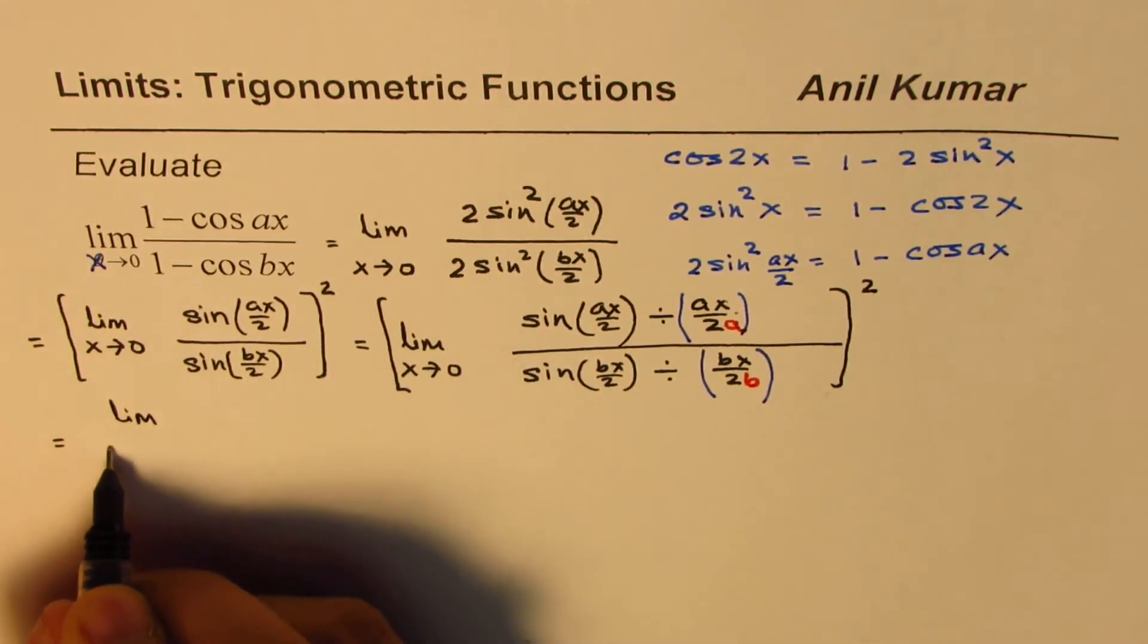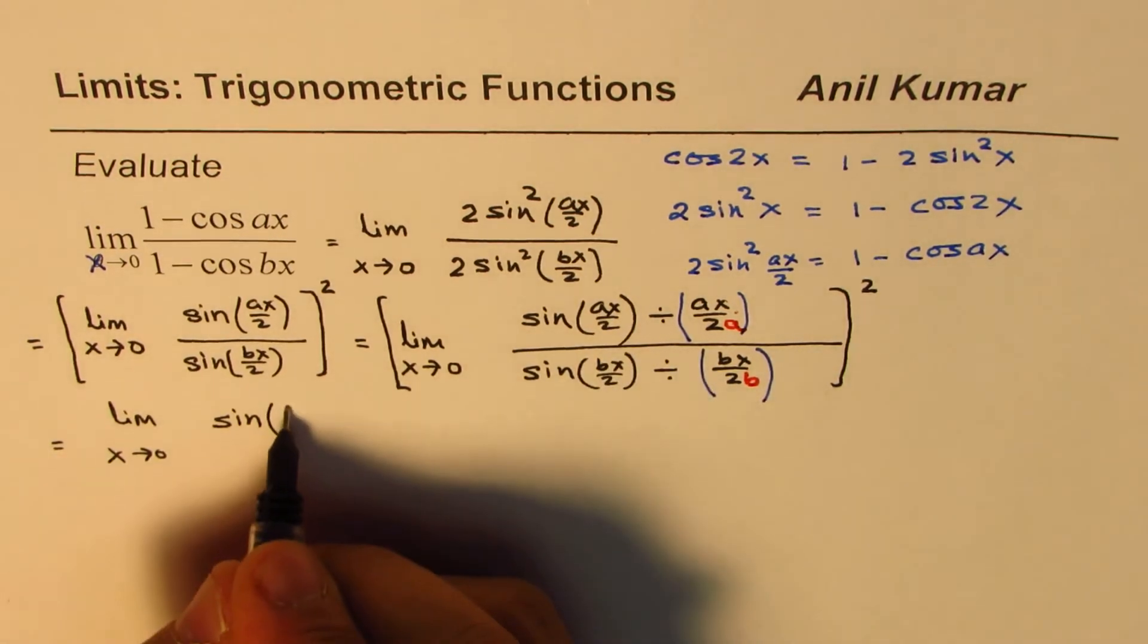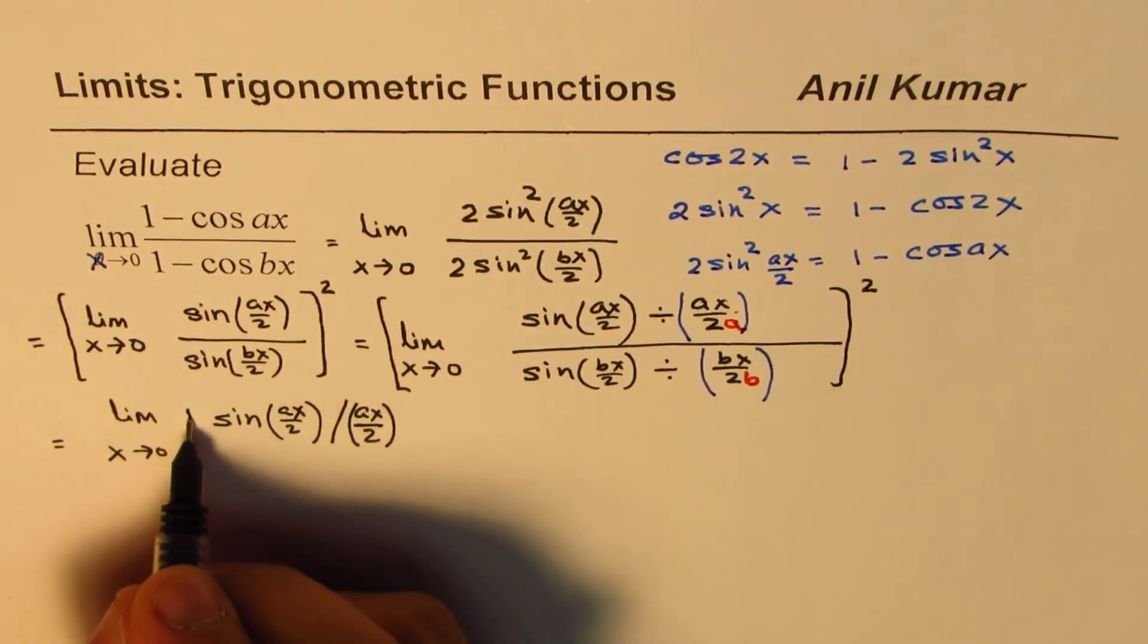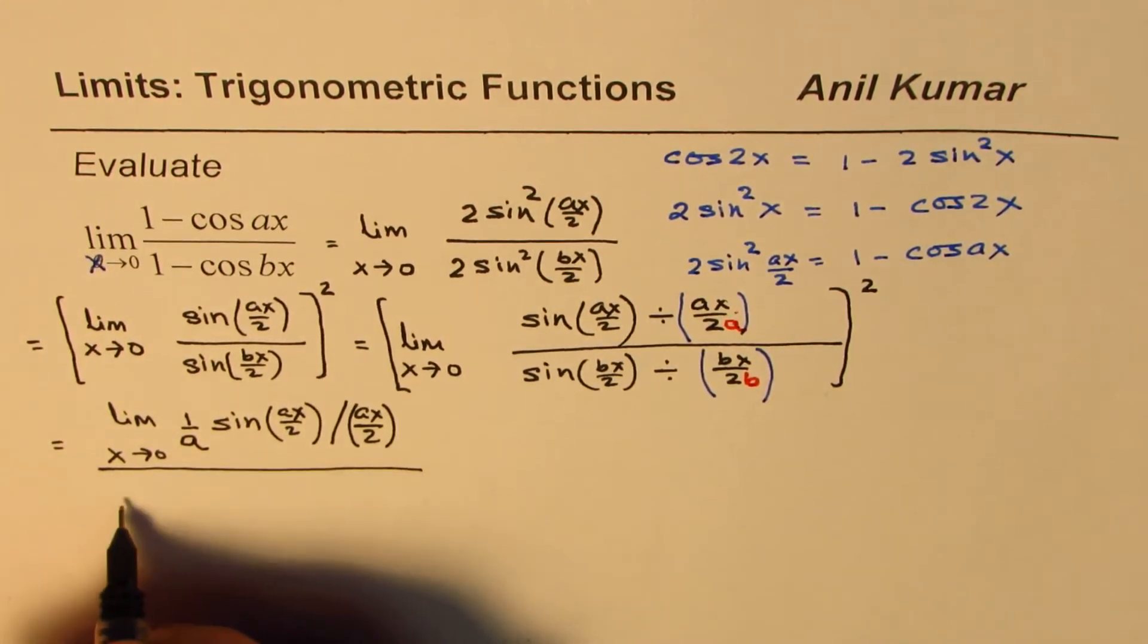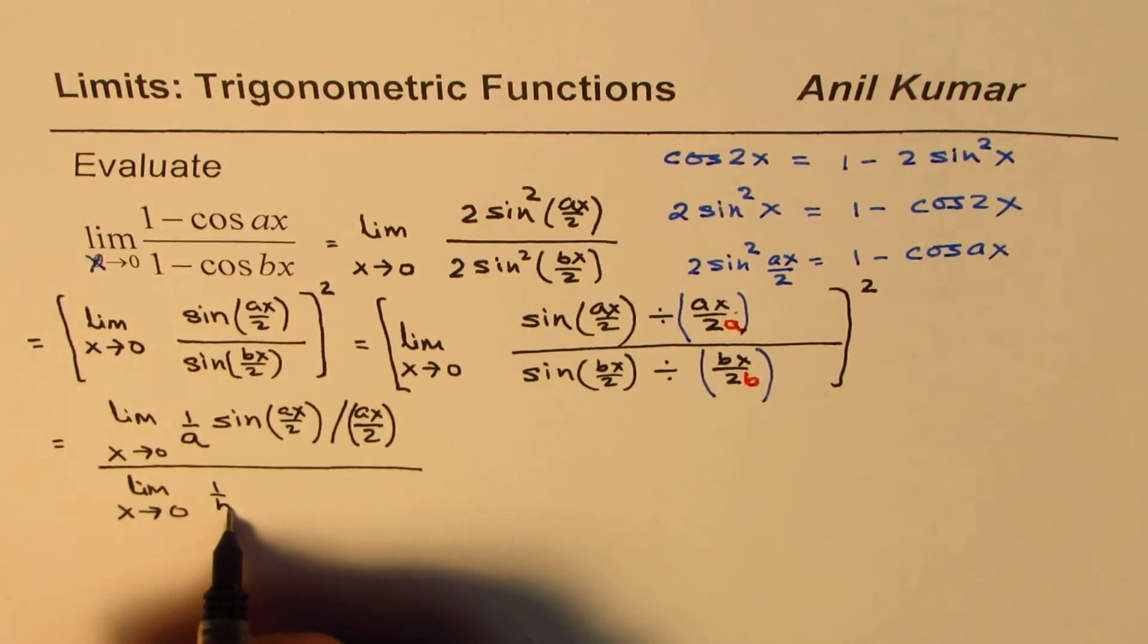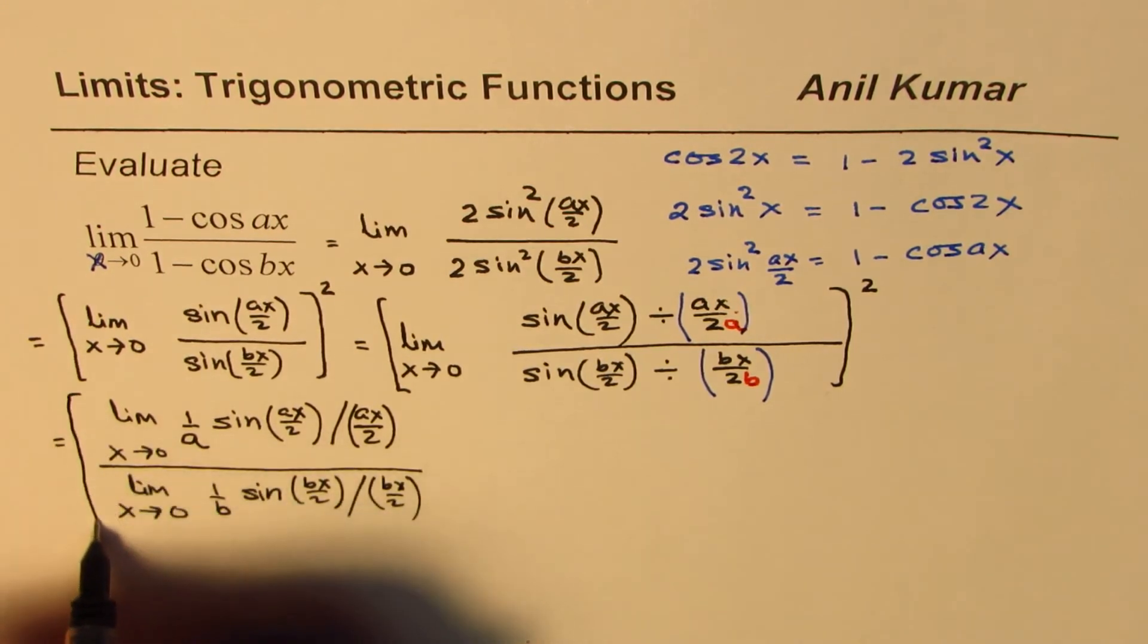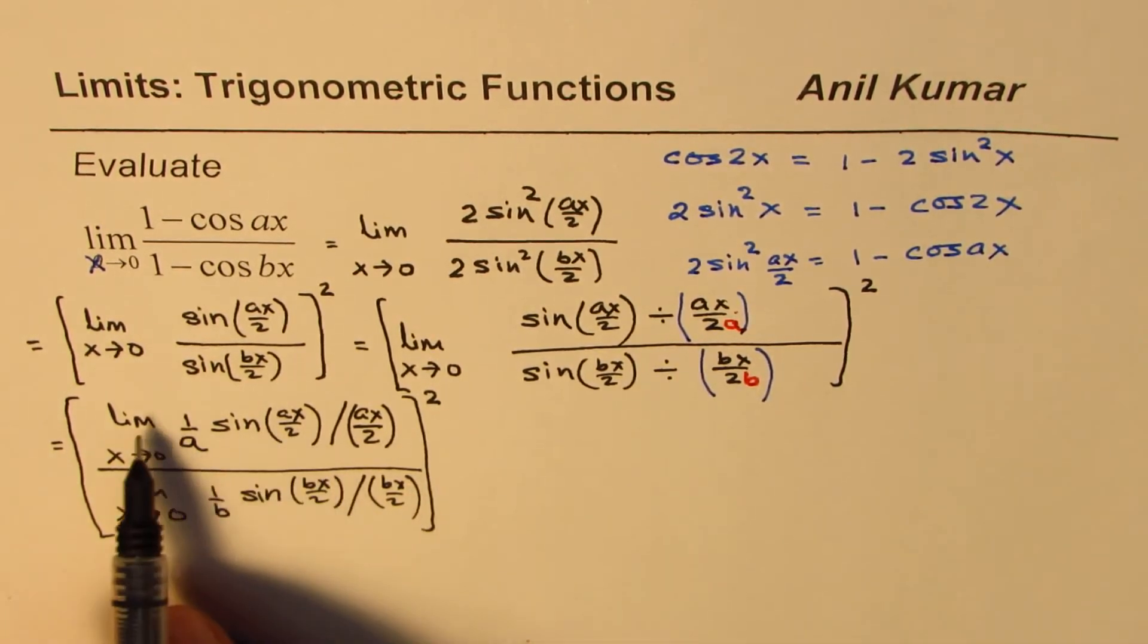So next step I could have written direct also, which is limit x approaches 0 for [sin(ax/2) / (ax/2)], and then I have left with this a here, so I'm doing this as 1/a. So that becomes the numerator part. Similarly I will write the denominator part as limit x approaches 0, so I'm writing this divided by this means 1/b [sin(bx/2) / (bx/2)]. And this is whole square, so go through this step clearly to understand.